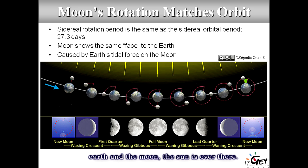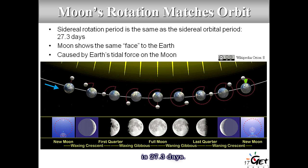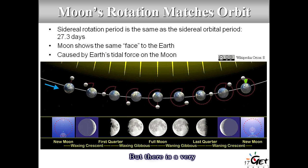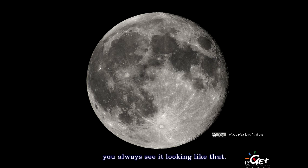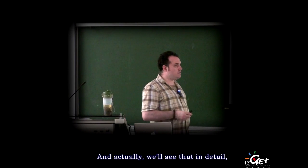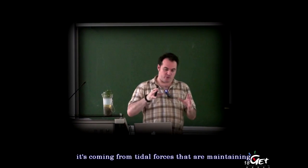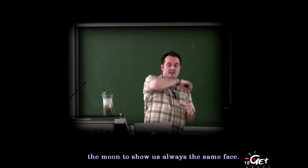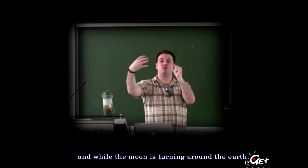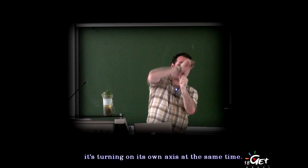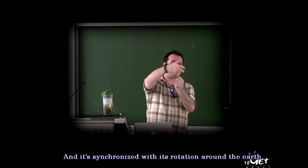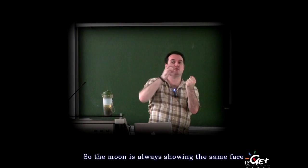The Moon's rotation matches its orbit — the sidereal rotation is the same as the sidereal orbital period. The Moon does a full tour around the Earth in 27.3 days. There's a very interesting property: the Moon always shows the same face. Wherever you are on Earth and whenever you look, you always see the same side. This comes from tidal forces that keep the Moon showing us always the same face — the Moon rotates on its own axis synchronized with its revolution around Earth.